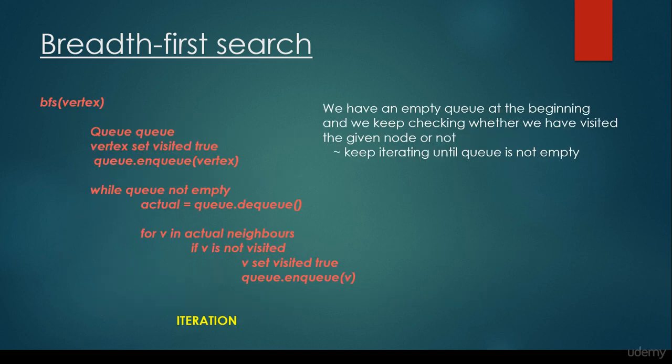Let's take a look at the concrete source code. It is very important that in breadth-first search we have to use a FIFO structure — a first-in-first-out structure — and that is why we use the queue abstract data type. We have an empty queue at the beginning, and we keep checking whether we have visited the given nodes or not, iterating until the queue is empty.